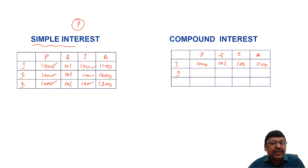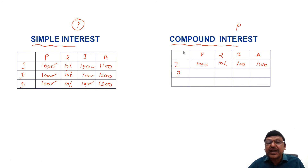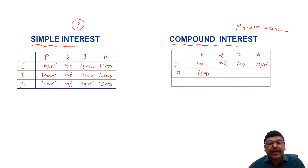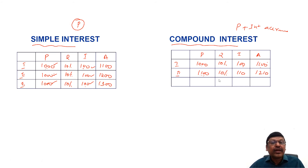If this is continued and not repaid at the end of the first year, for the second year, in compound interest, interest is calculated not only on the initial sum but also on the interest accrued. The interest accrued is 100, so interest is calculated on 1100. In other words, the amount outstanding at the end of the first year becomes the principal for the second year. At 10 percent, 10 percent of 1100 is 110.